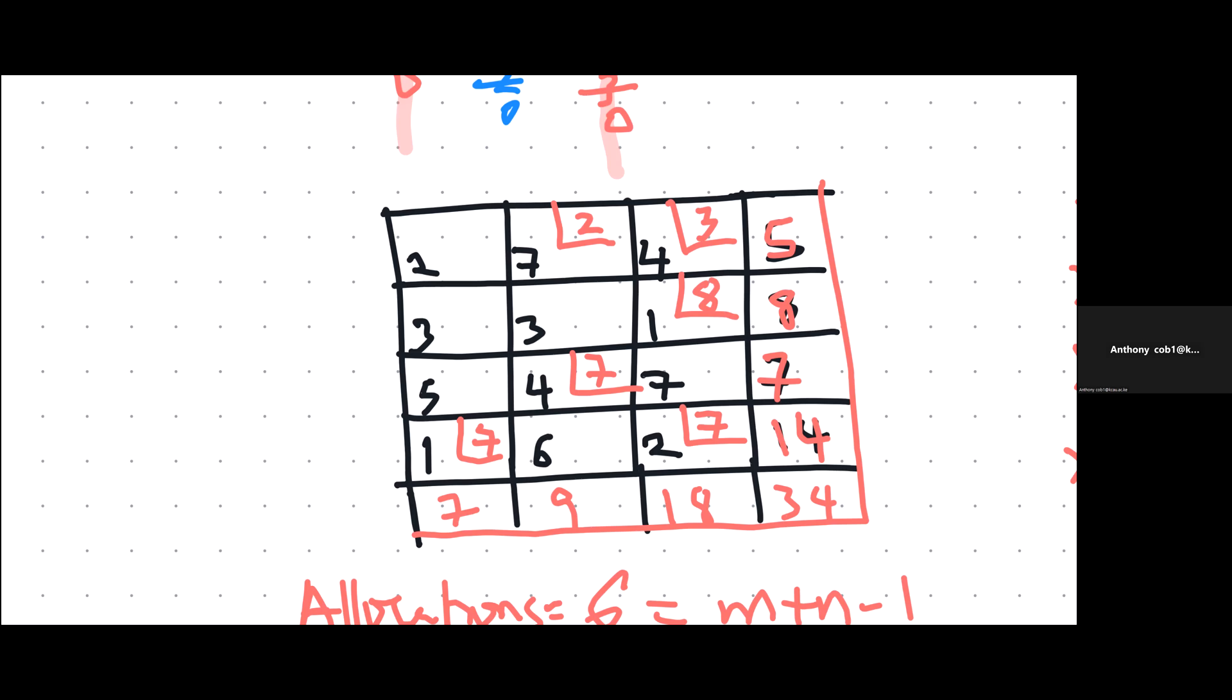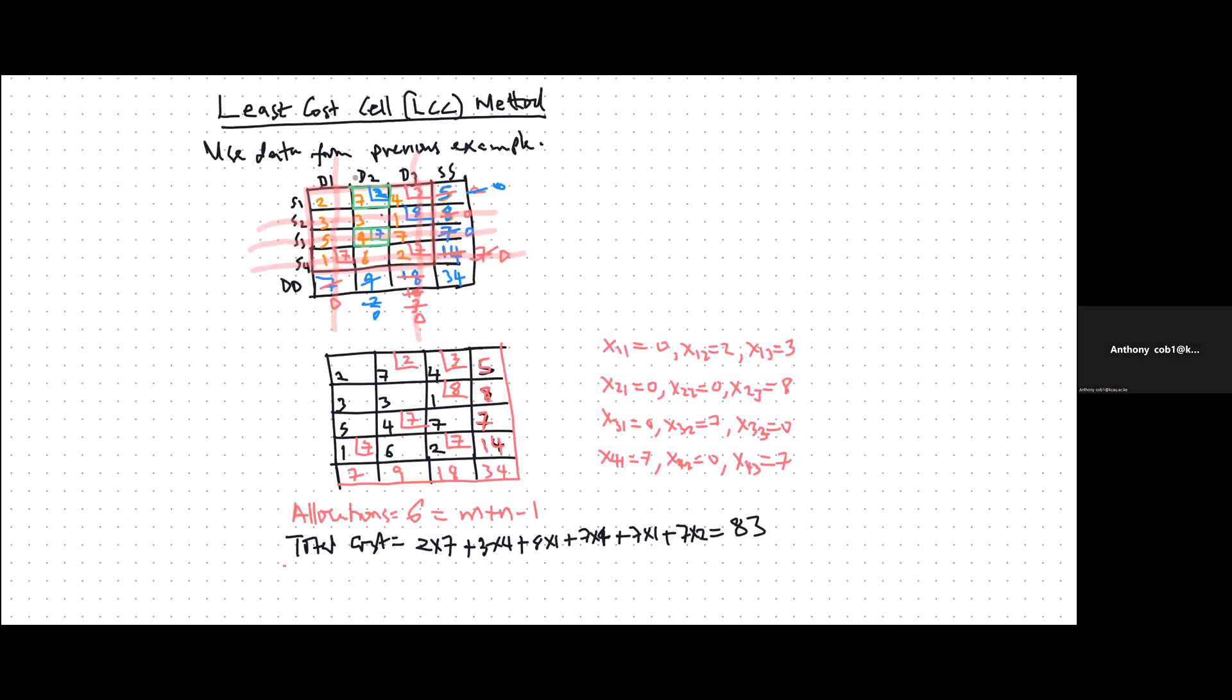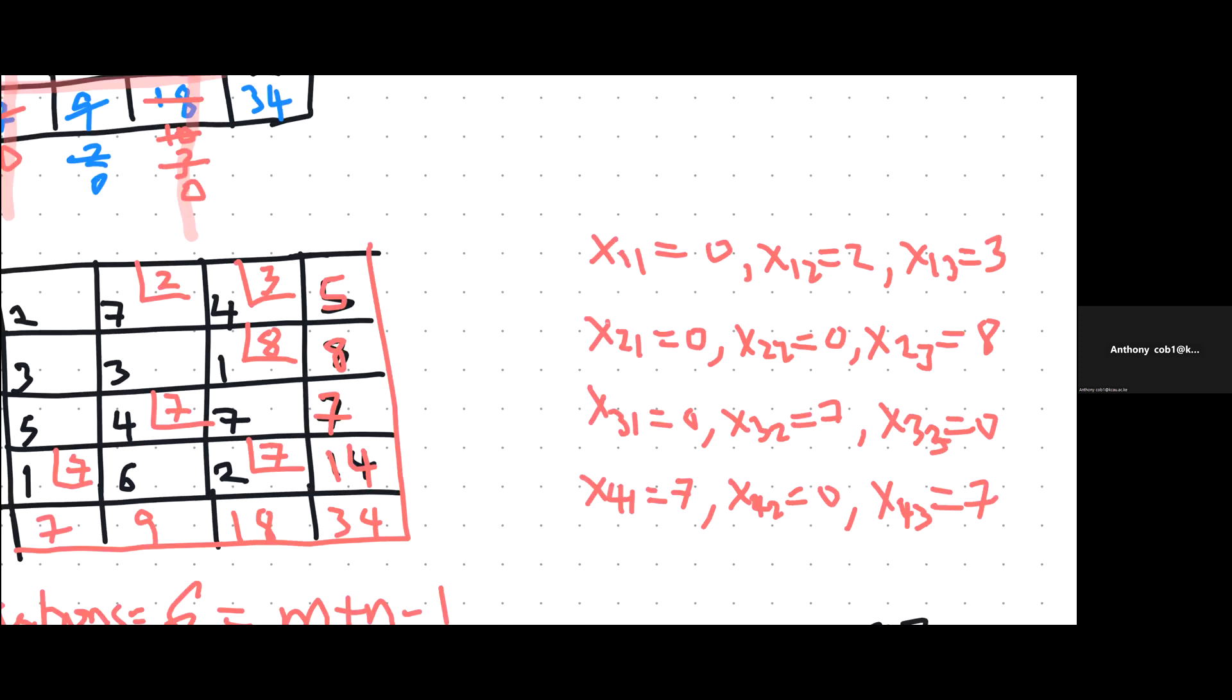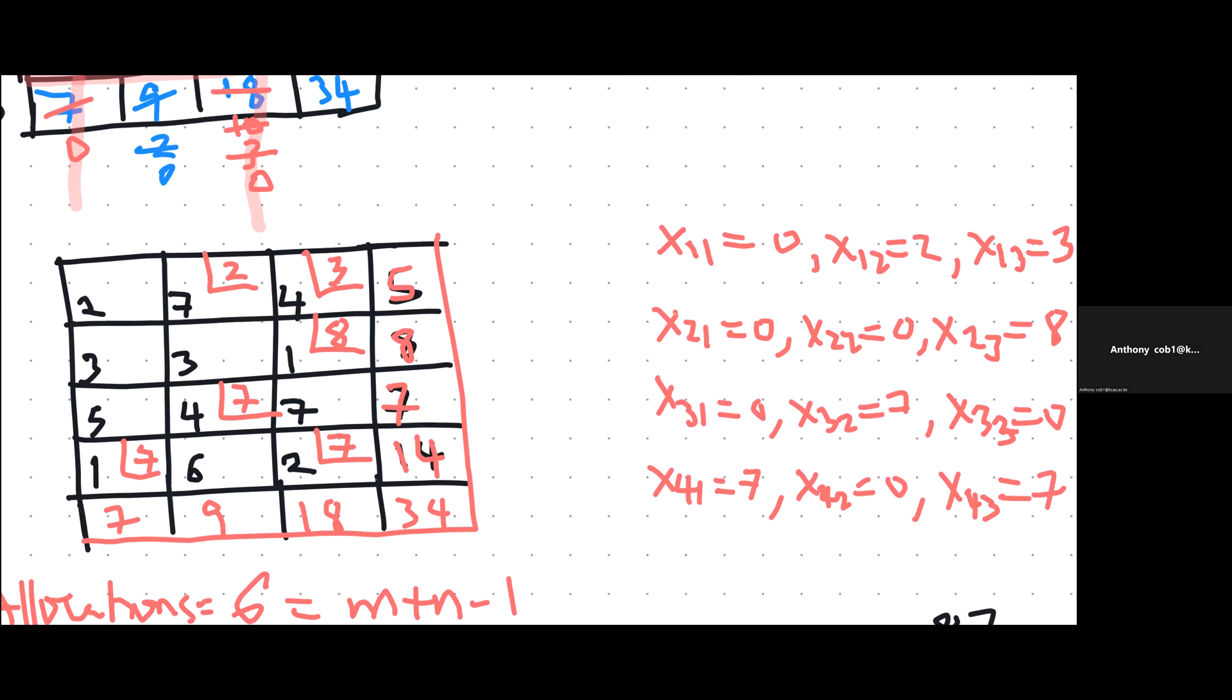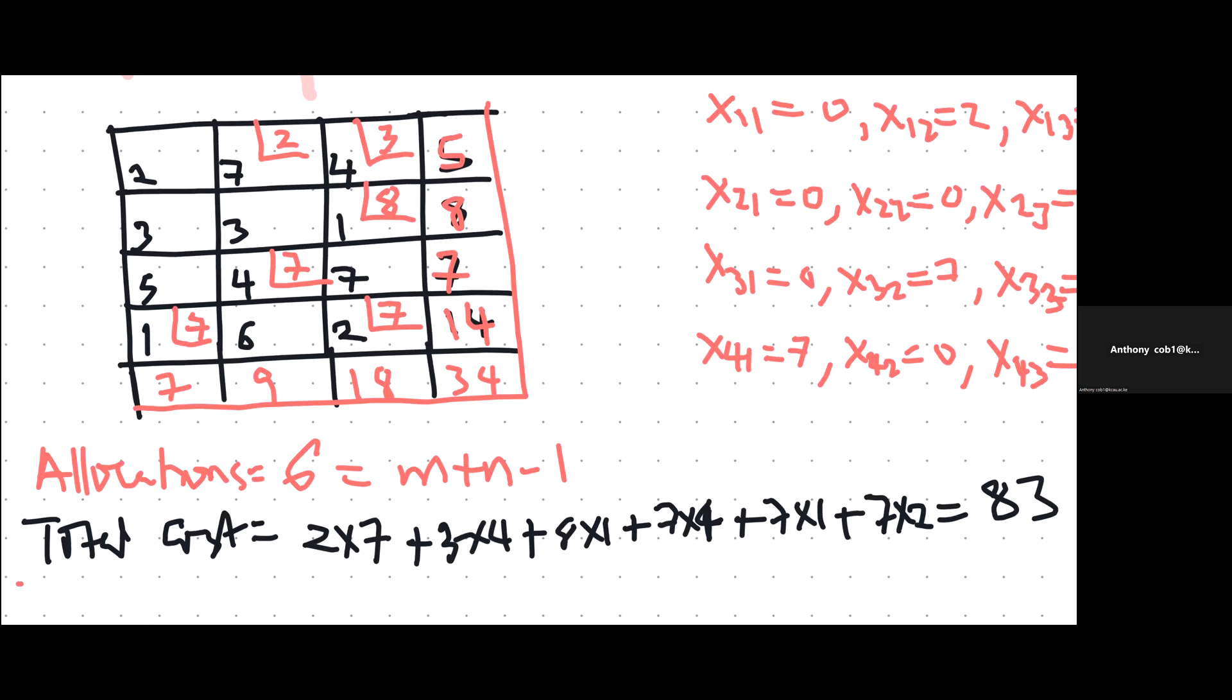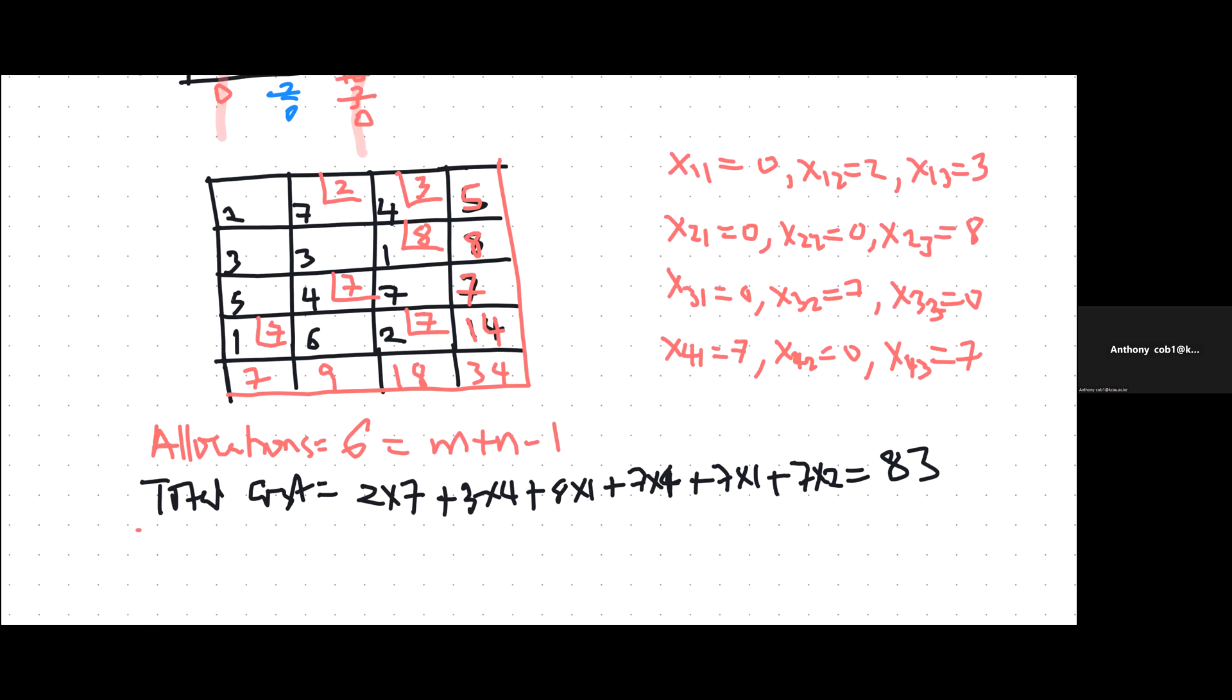What are the solutions to this question? We have x1-1 is 0. That means that we are transporting nothing here. Then x1-2 is 2, and so on and so forth. The total cost of transportation, you multiply the number of units being transported by the unit cost. If you do the math, you will get the total cost of transporting all those goods to those destinations. According to this method is 83.